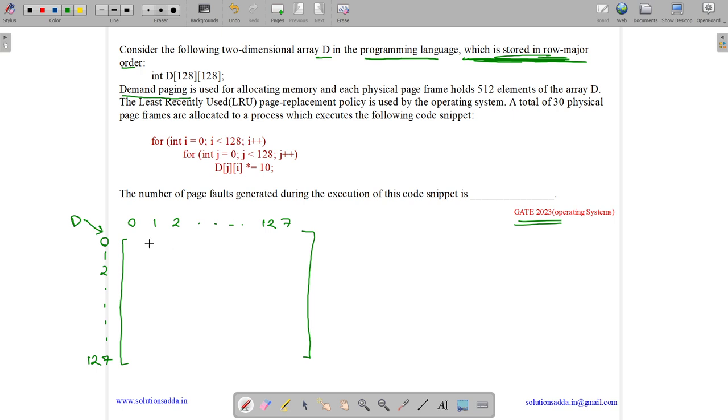Demand paging is used. What is the meaning of demand paging? Demand paging means initially empty main memory, which means initially no page is there in the main memory. It is used for allocating memory. And each physical page frame holds 512 elements. So we have a page and it can have only 512 elements of the array D. 512 elements means we can say either 4 rows, as it is stored in row major order. It can store 4 rows: 0 to 127, 128 elements into 4 rows, which is 512 elements. One page equals to 4 rows.